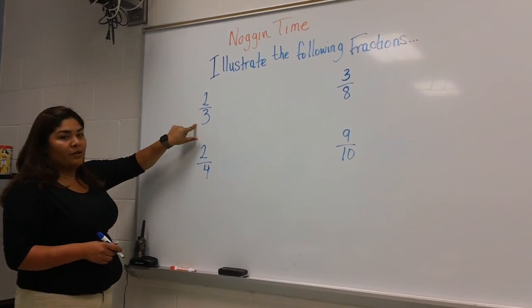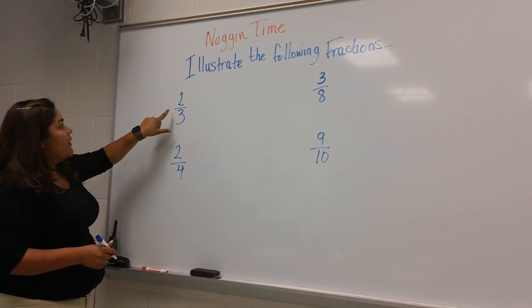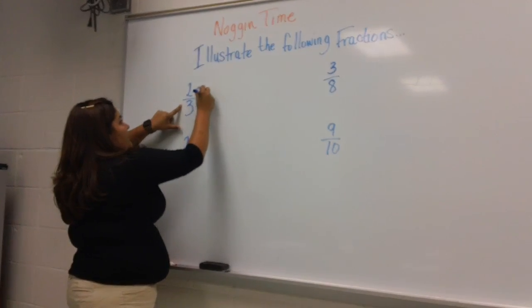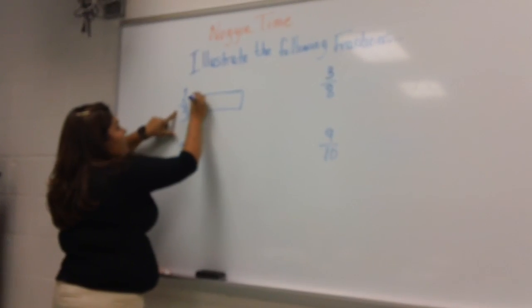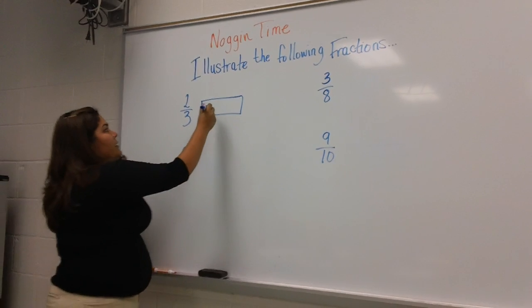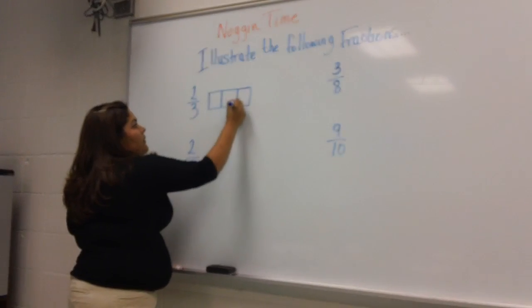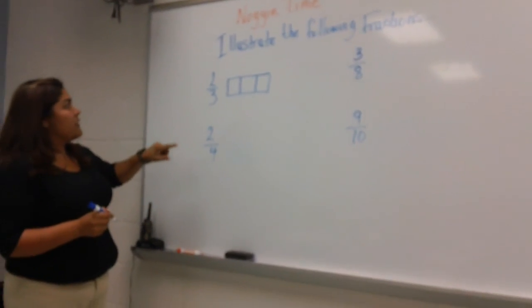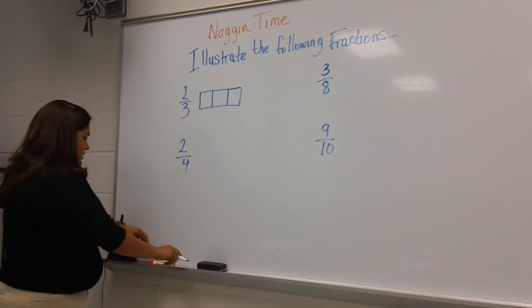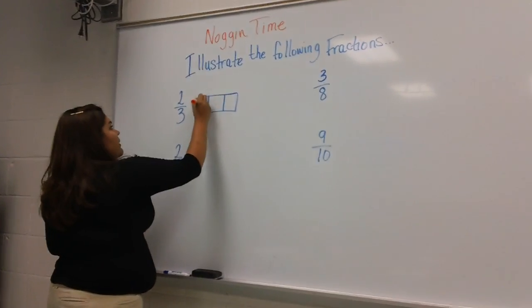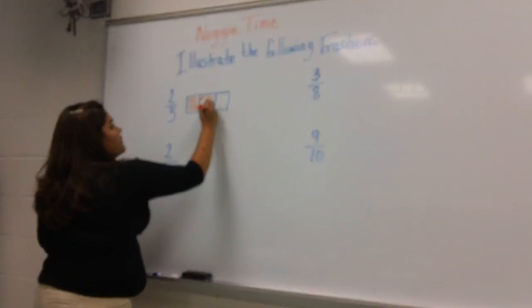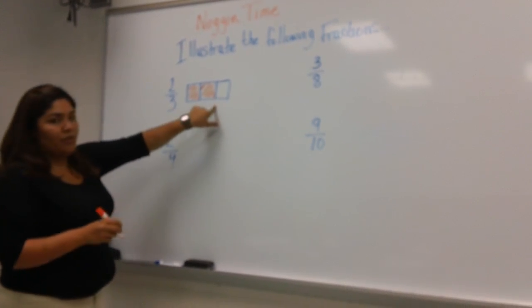We're going to start with two-thirds and we're going to make our whole here, and we're going to divide it into three equal parts: one, two, three. Then we're going to take two of those parts to make our fraction. So we take one, two - we have two out of the three, two-thirds.